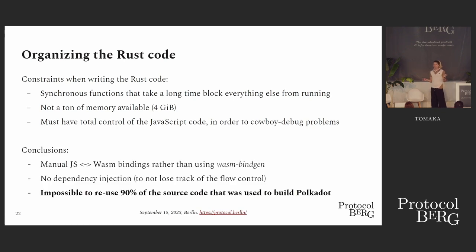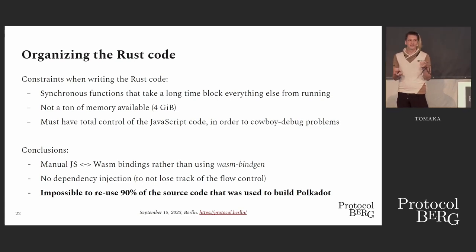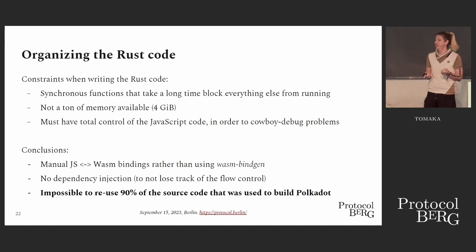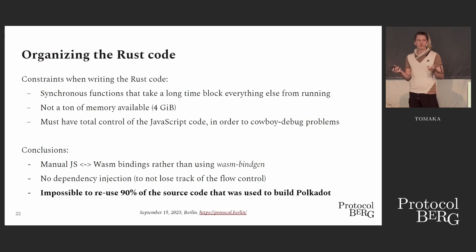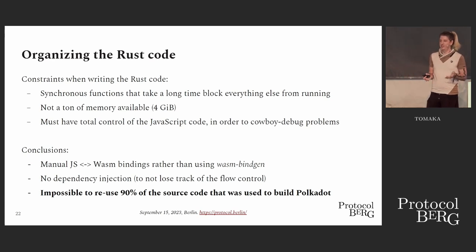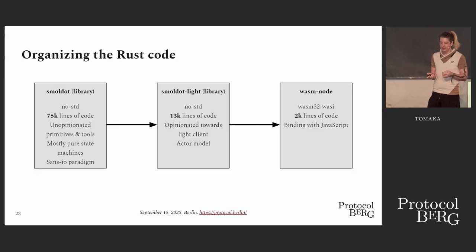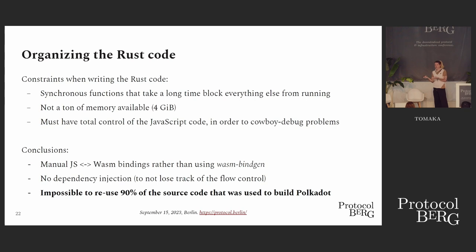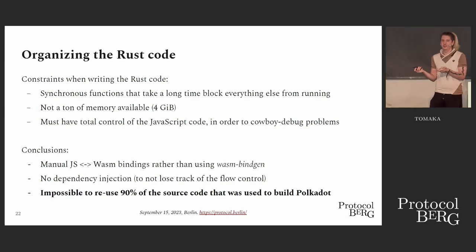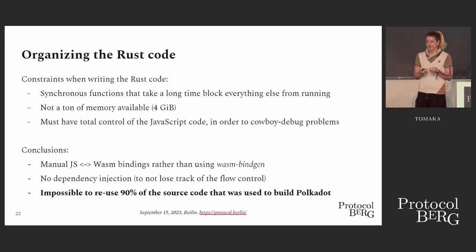For these reasons, we didn't use wasm-bindgen — I recommend against using wasm-bindgen. No dependency injection either, because you want to understand everything that happens easily. For all these reasons, we couldn't use 90% of Substrate's source code — everything was basically written from scratch, mostly to have total control over JavaScript. That's one of the main reasons why this was never done before: you need to write a client with all these constraints in mind. I tried to adapt an existing client for six months and realized it wouldn't lead anywhere.